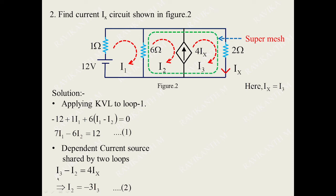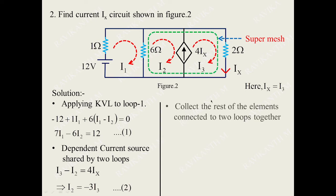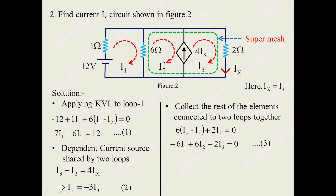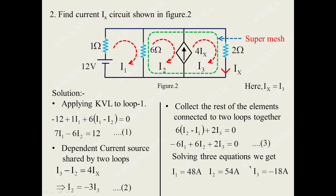The super mesh second equation collects elements connected to both loops: 6·(i2 minus i1) plus 2·i3 equals 0 — the third equation. Solving these three equations gives i1 equals 48 amperes, i2 equals 54 amperes, and i3 equals minus 18 amperes. The value of current matches what we got with node analysis. So whether you use super mesh analysis or node analysis, you get the same answer. Since ix equals i3, ix equals minus 18 amperes.